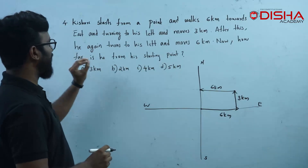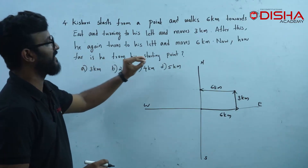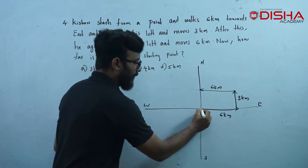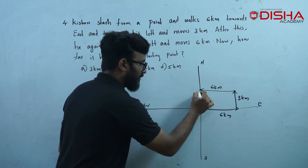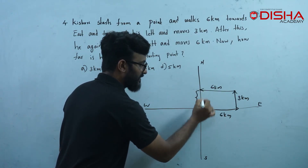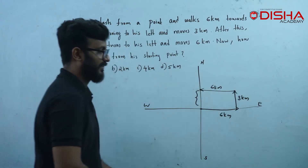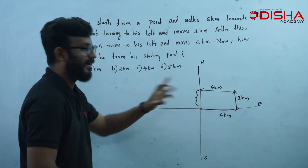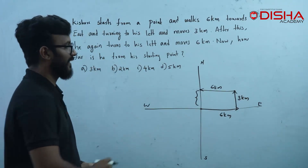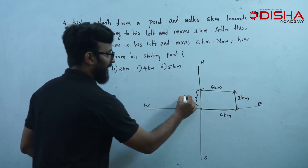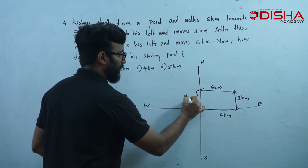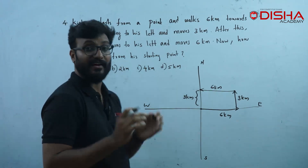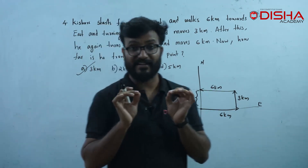Now, how far is he from his starting point? Kishore goes to a distance from the starting point. It's simple — Option A is the right answer.